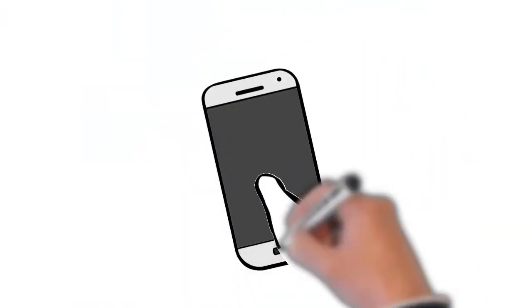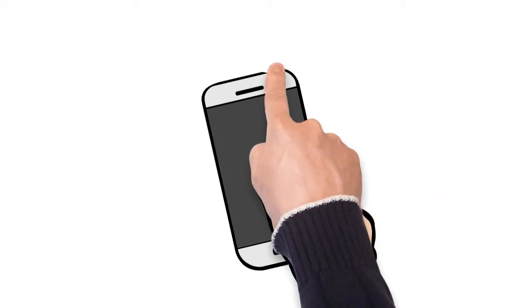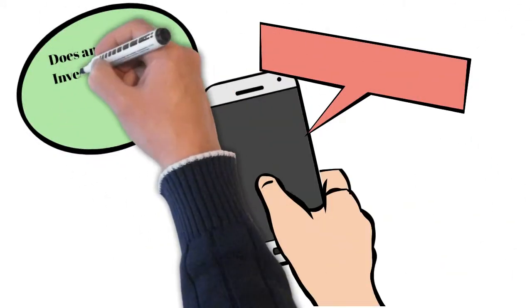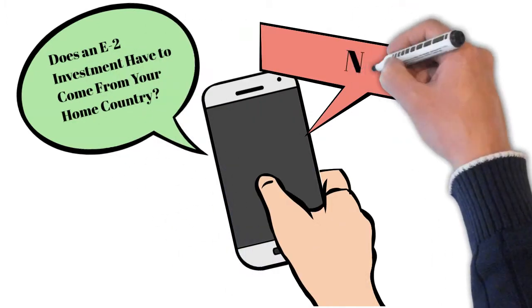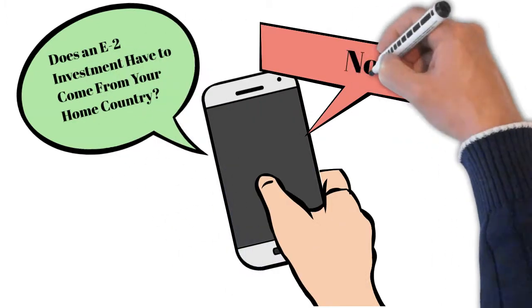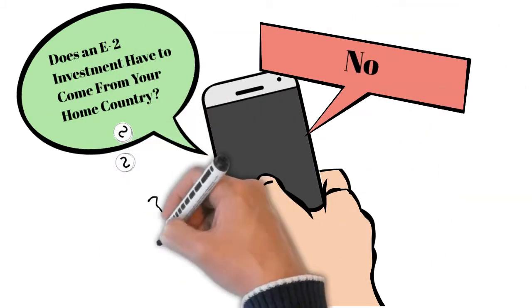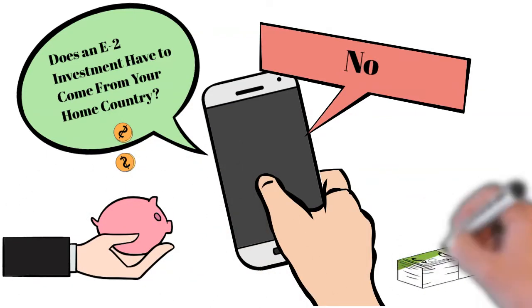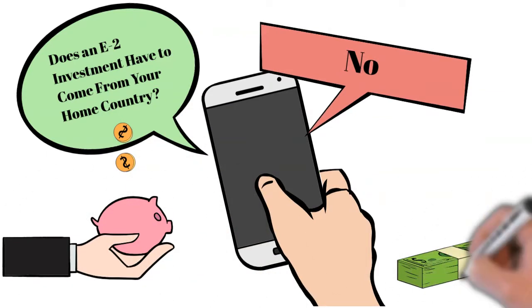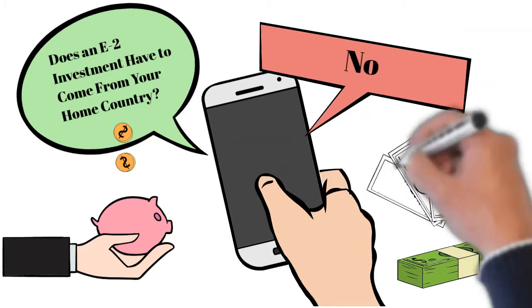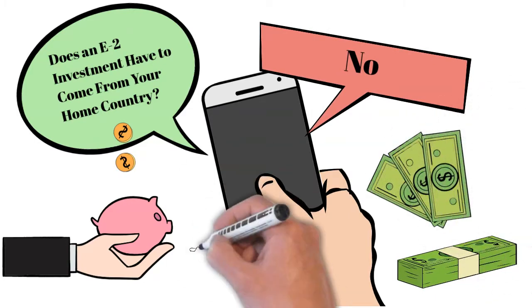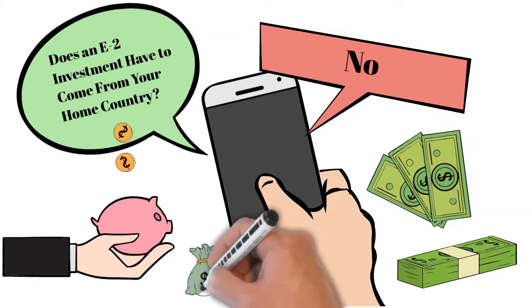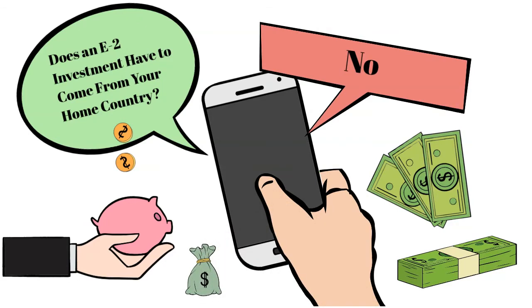One question that often comes up is whether the funds invested must come from or originate in the treaty country. The clear answer is no. Provided the funds come from a legitimate source, they can come from any country. For example, if an E2 applicant from Australia borrowed money from a US citizen to invest, and the US citizen earned the money in the US, these investment funds would qualify. There would not be a requirement that the funds came from or originated in Australia.